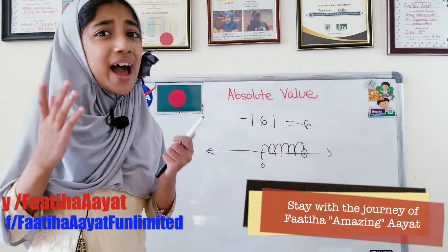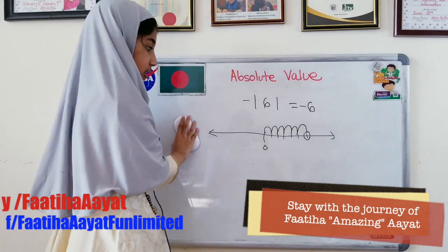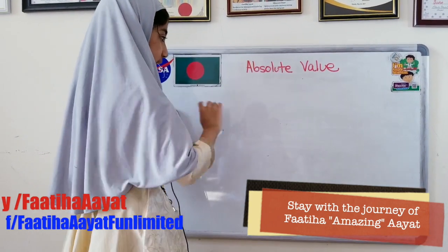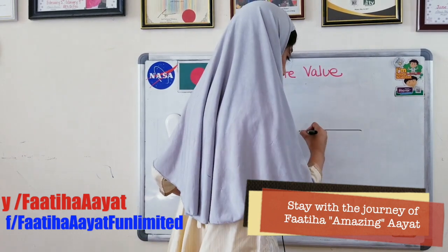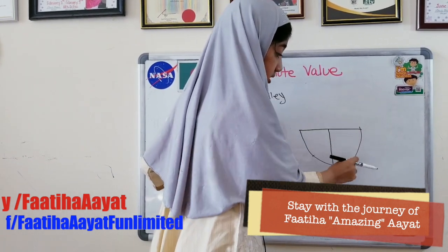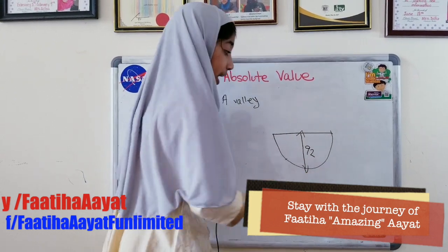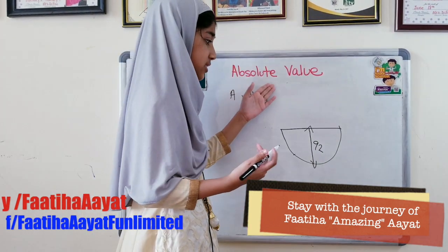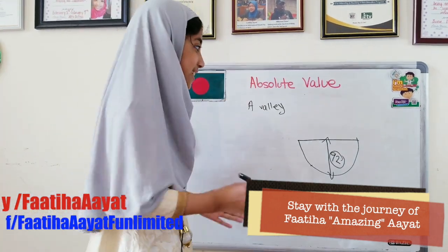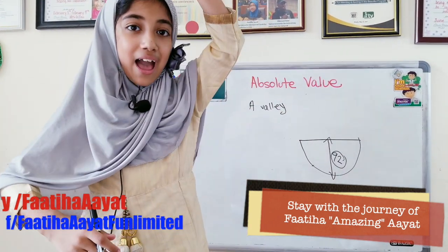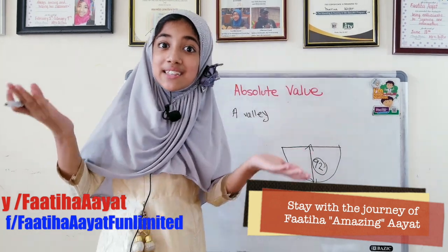Now, I'm going to tell you why we need absolute value. Engineers also need absolute value. For example, there is a valley, and that valley is above the sea level, and the seabed is 92 away. That is why we actually need the absolute value, because this is the absolute value — that 92 meters or miles, 92 in depth, is the absolute value of how high the valley is above the sea level and the seabed. So, this is how engineers can use it.